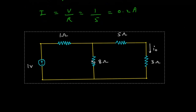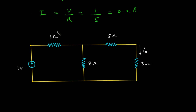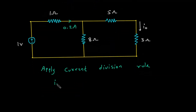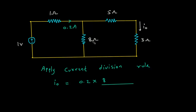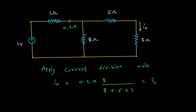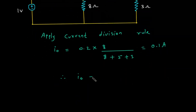Now from this, the value of I is 0.2 Ampere. So we have to find I.O. We will apply the current division rule. So I.O is equal to the opposite branch resistance, which is 8 Ohm, into this current 0.2, so 0.2 into 8 by 8 plus 5 plus 3. This is 0.1 Ampere. Therefore I.O is equal to 0.1 Ampere.